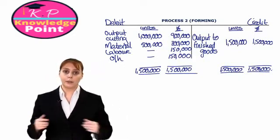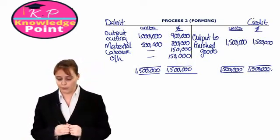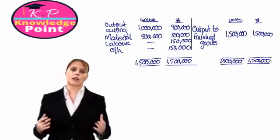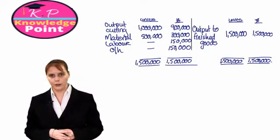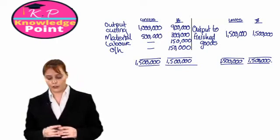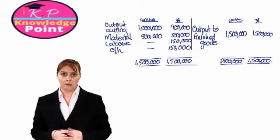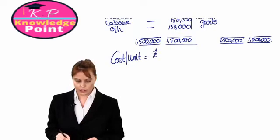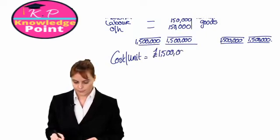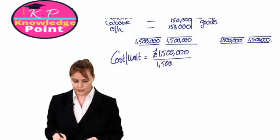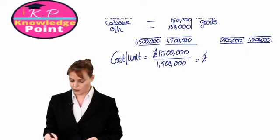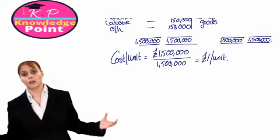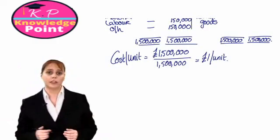Those are our simple process accounts. One quick question before we move on: what is the cost per unit of each of our one and a half million units? How much has it cost the company to produce these 1.5 million units? The straightforward answer is that our cost per unit is the total cost of producing all those units divided by the number of units produced. So our cost per unit is one pound — we are simply spreading our total cost evenly across all the units we have produced.